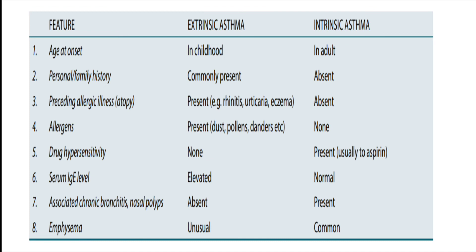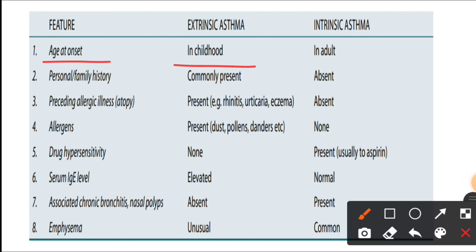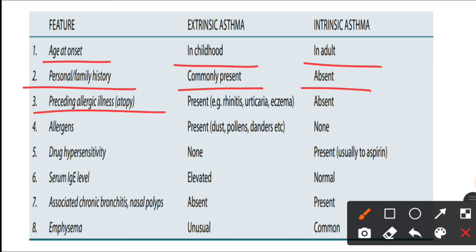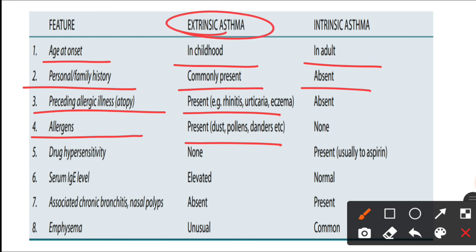This image from Harman's pathology book demonstrates the difference between extrinsic and intrinsic asthma. Extrinsic asthma is atopic and allergy-related. The age of onset in extrinsic asthma is childhood, less than 25 years, while intrinsic asthma is usually seen in adults. Family history is commonly present in atopic asthma but absent in intrinsic. Allergen exposure — dust, pollen, rhinitis, urticaria — is present in extrinsic asthma but absent in intrinsic asthma.